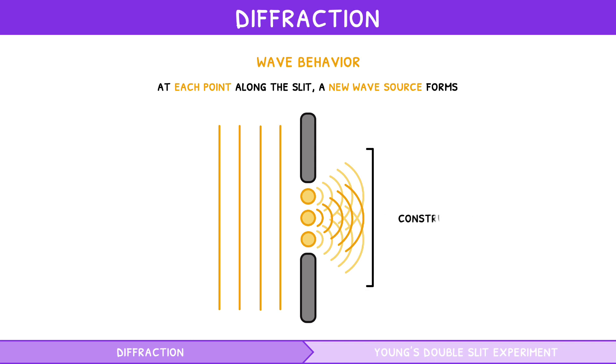Remember that constructive and destructive interference affect the intensity of a wave, called Huygens' Principle. Thus, the interference pattern can be visualized using an intensity distribution.